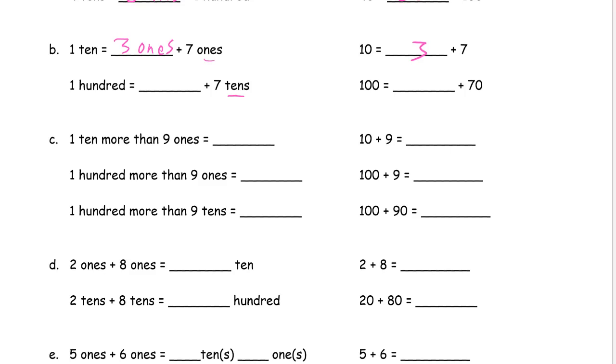Right, if ones can add up to tens then tens can add up to hundreds. So this is three instead of three ones it's three tens. It's 30 plus 70 being a hundred.